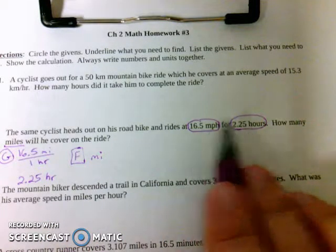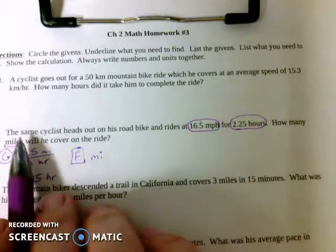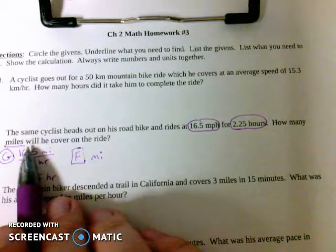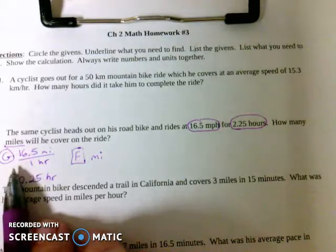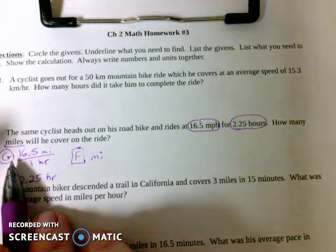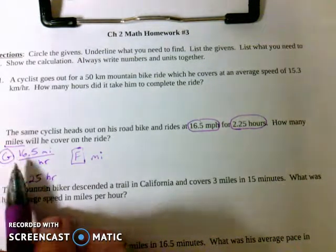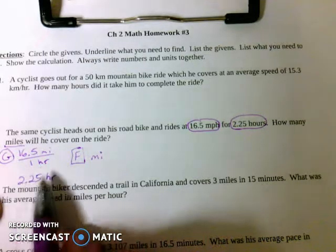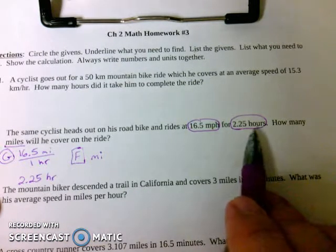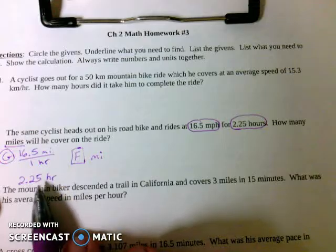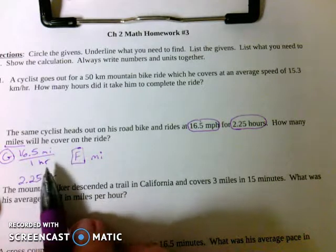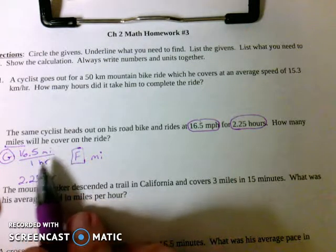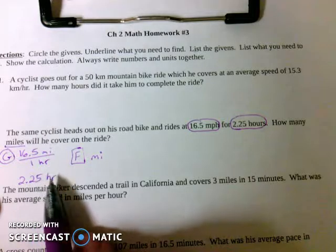We want to write it like this because it will help us set up our problem and help us find the right answer. And then he wrote for 2.25 hours. What are we trying to find? I'll put an F for find. I'll put a box around it. And we're trying to find miles. So let's put MI for miles.